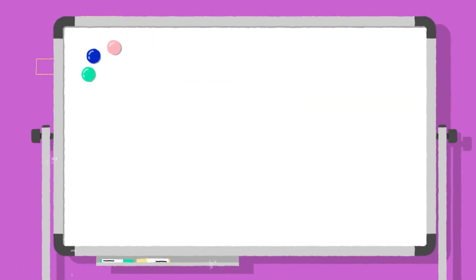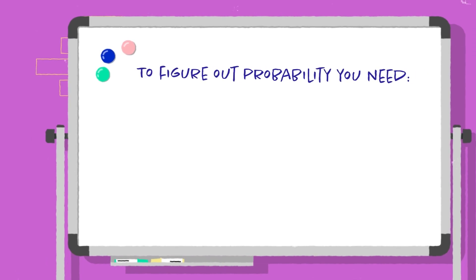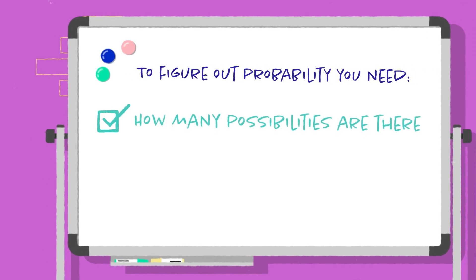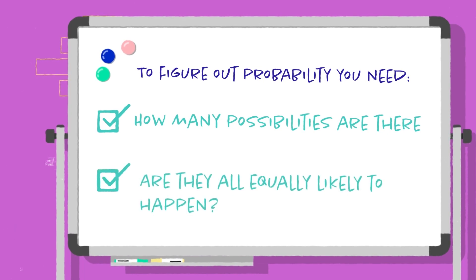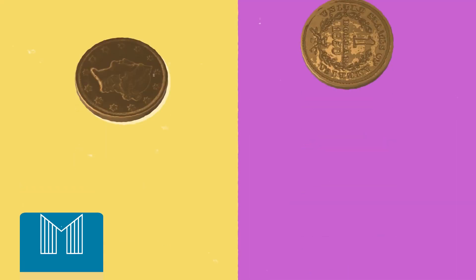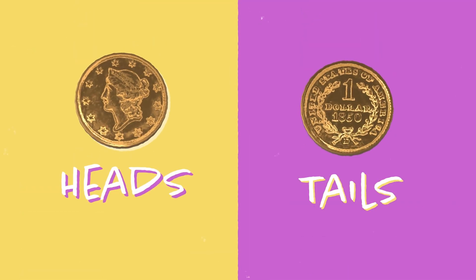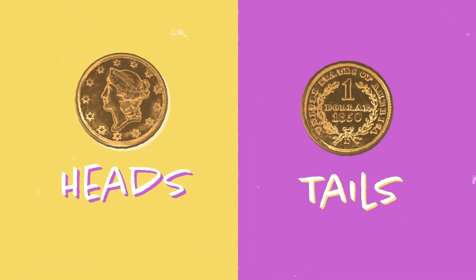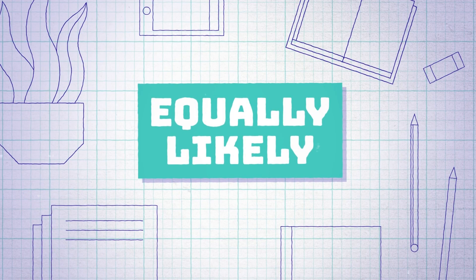To figure out probability you need to figure out two things. Firstly, how many possibilities are there? Secondly, are they all equally likely to happen? If we flip a coin, we know there are really only two outcomes — heads or tails. Is there any reason why one would happen more than the other? No. So they're equally likely.